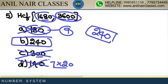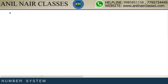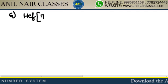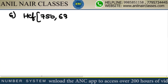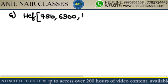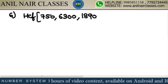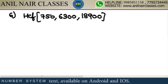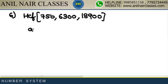This is how you should solve competitive exam questions. If you keep using traditional methods you will keep failing the exam. Next question: HCF of 750, 6300, and 1890. Options: a) 150, b) 180, c) 210, d) 170.